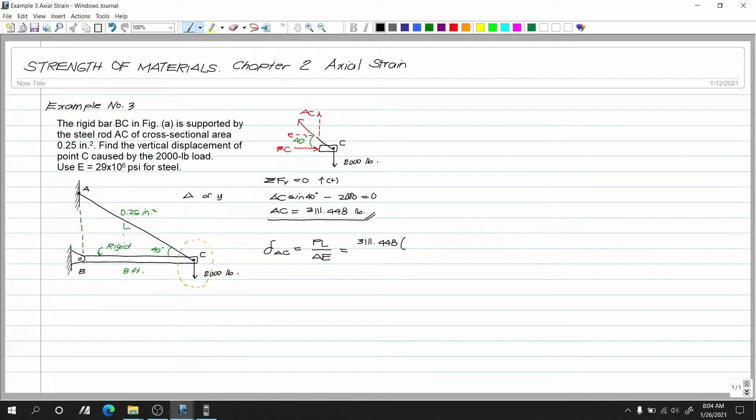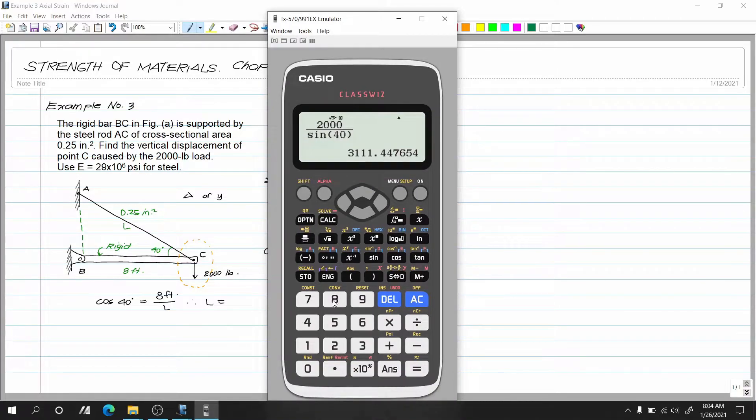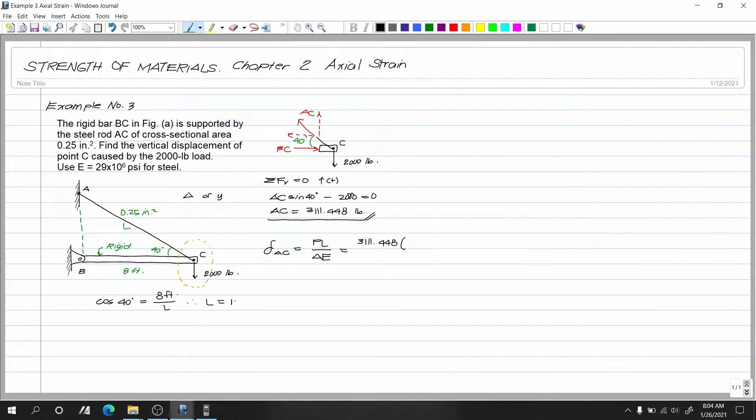So paano mako yung L? This is adjacent to 40 and this is hypotenuse. So ibig sabihin, cosine. Cosine of 40 degrees equals to adjacent na 8 feet over L. Therefore, L is equals to 8 over cosine of 40. Ang ating L is 10.443. So 10.443 feet. So 10.443 then multiply natin ng 12 para maging inches.